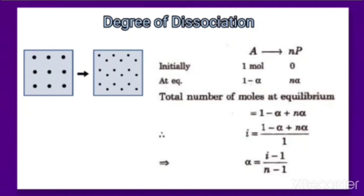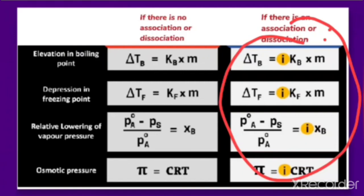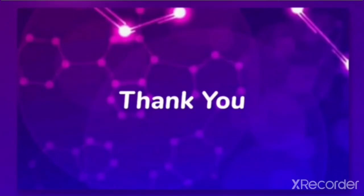This is all about abnormal molar mass. Remember the formulas introducing the van't Hoff factor — if there is a solute undergoing association or dissociation, use the modified colligative property formulas incorporating i. Problems based on the van't Hoff factor will be discussed in the next video. Have a nice day.